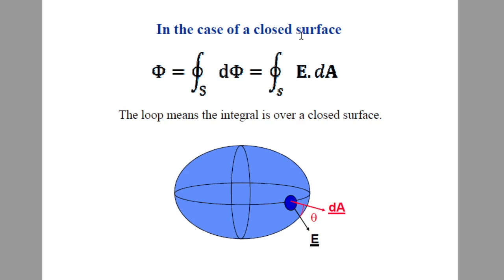Now, in the case of a closed surface — for example, a shape that has a boundary and encloses a volume — it is called a closed surface. A football is a closed surface, and an ellipsoid is also a closed surface. For any closed surface, we consider the total flux passing through it.